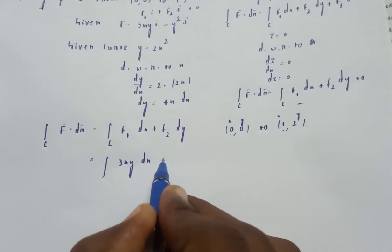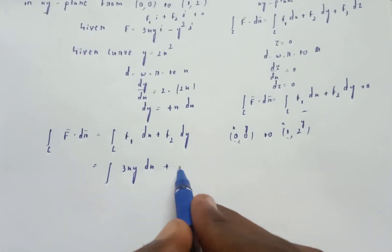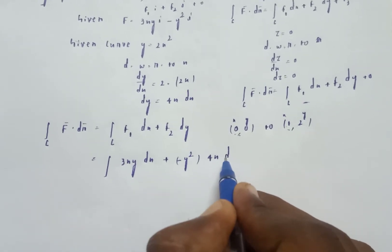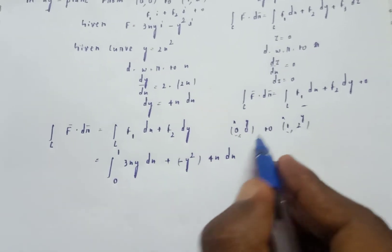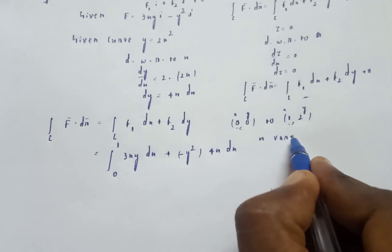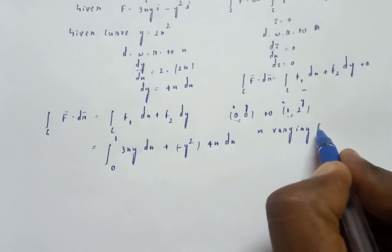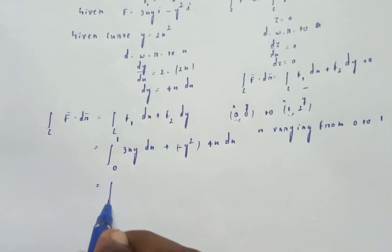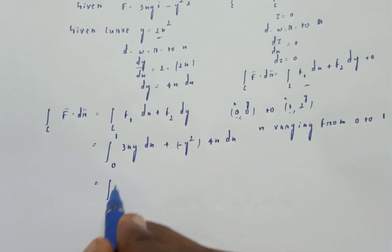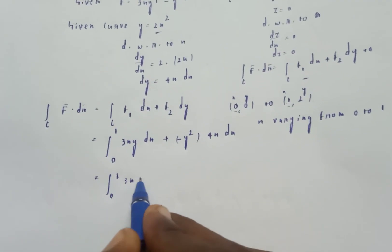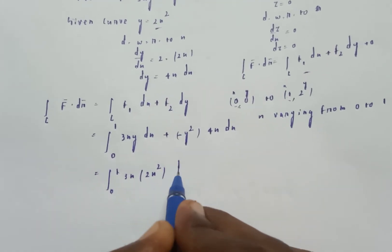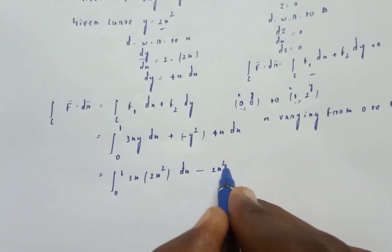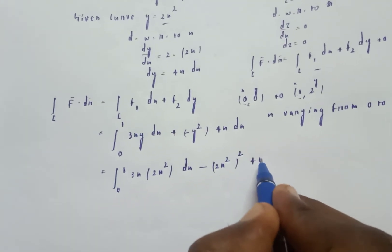Substituting: f1 is 3xy, so replacing y with 2x square gives 3x times 2x square, and dx. Plus f2 is minus y square, with dy equal to 4x dx. The x limits are from 0 to 1. Replacing y with 2x square: integral 0 to 1 of 3x times 2x square dx minus (2x square) squared times 4x dx.